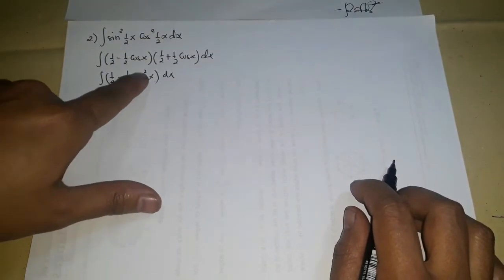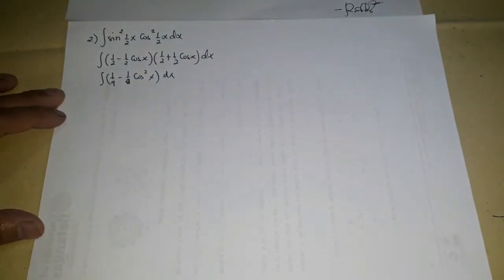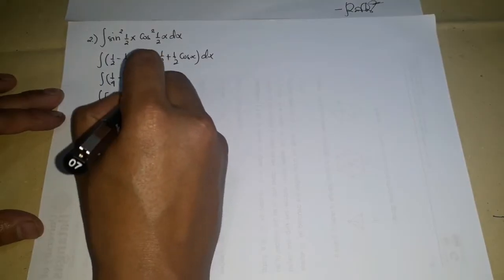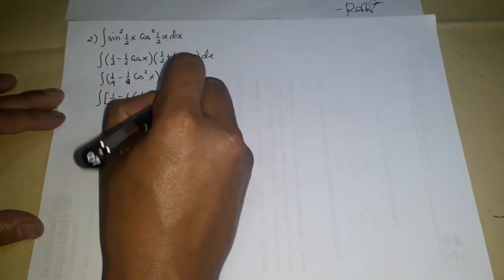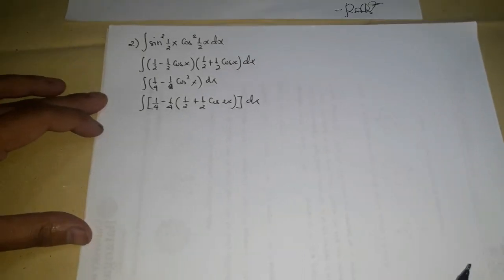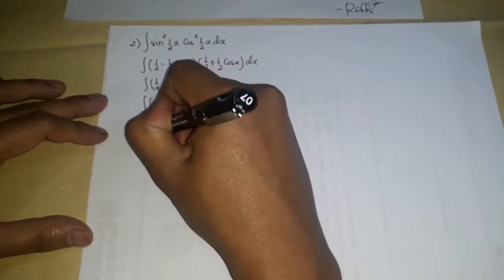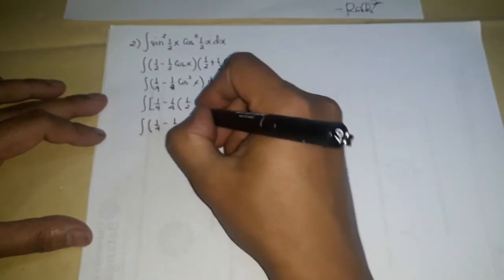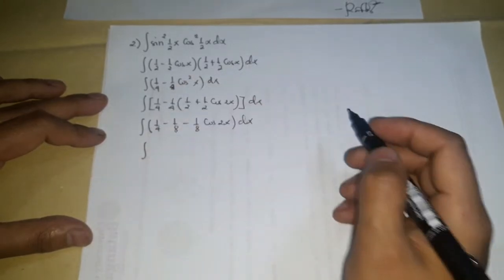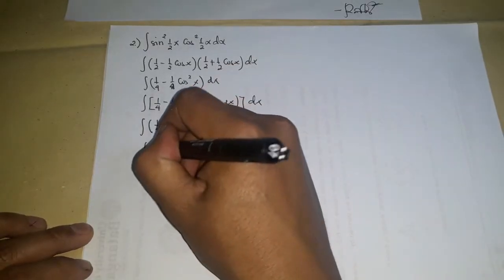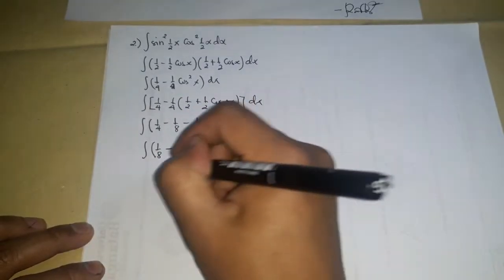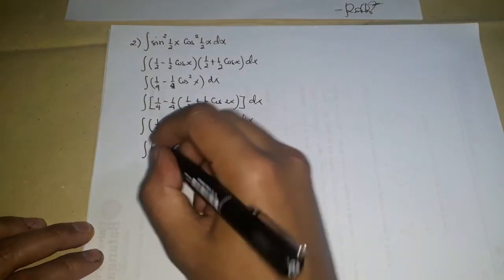Since cos²(x) appears, we apply the identity again: cos²(x) = 1/2 + (1/2)cos(2x). Substituting: integral of 1/4 − (1/4)(1/2 + (1/2)cos(2x)) dx. Simplifying the integrand: 1/4 − 1/8 − (1/8)cos(2x) dx = 1/8 − (1/8)cos(2x) dx.